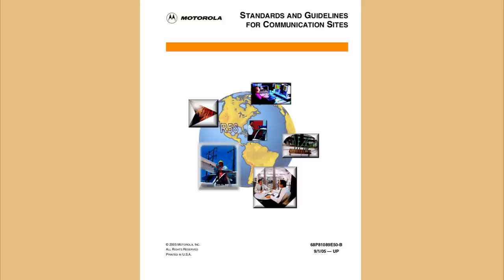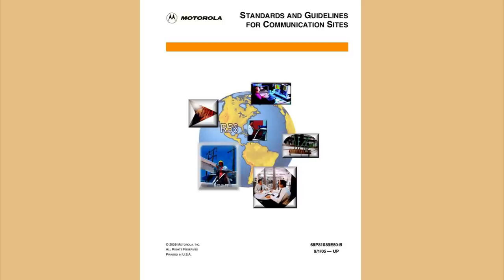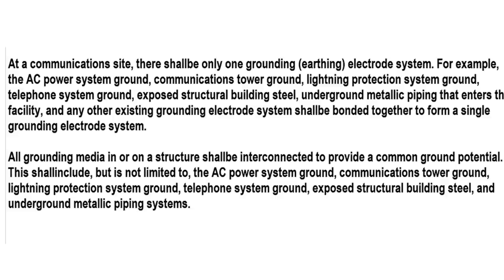Motorola has written a book on grounding equipment. And it says, at a communications site, there shall be only one grounding earthing electrode system. And it means one grounding system for everything. They're all tied together.